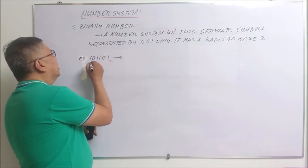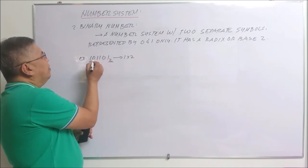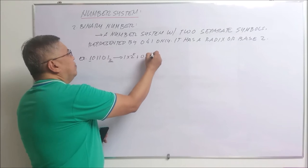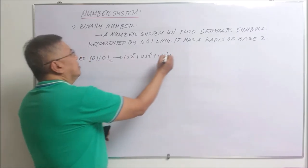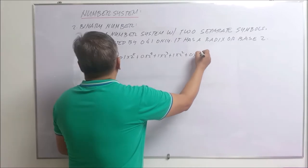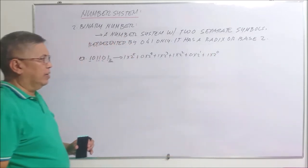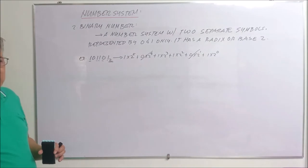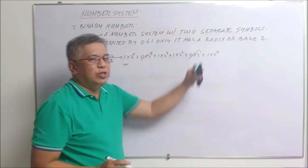You have the number 1 here multiplied by the base two raised to the fifth — counting one, two, three, four, five — plus zero times two raised to the fourth, plus this one times two to the third, plus one times two to the second, plus zero times two to the first, plus one times two to the zero. The zero terms can be eliminated because any number multiplied by zero is simply zero.